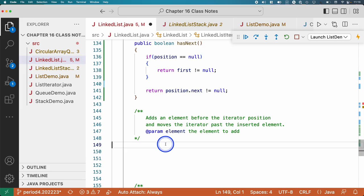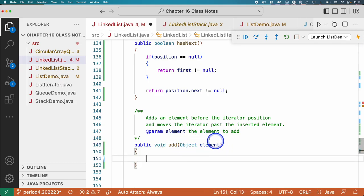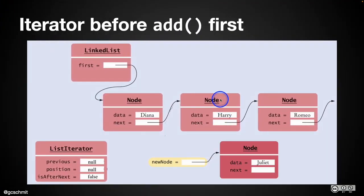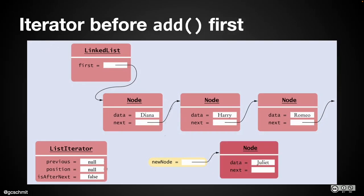Let's do add — public void add, one parameter which is a reference to the element to add. It's not a reference to a node, it's a reference to the element. Two different cases: what if our iterator is at the beginning of the linked list? That means position is null. We're going to make a new node, put the data in it, and insert it at the beginning of the list.